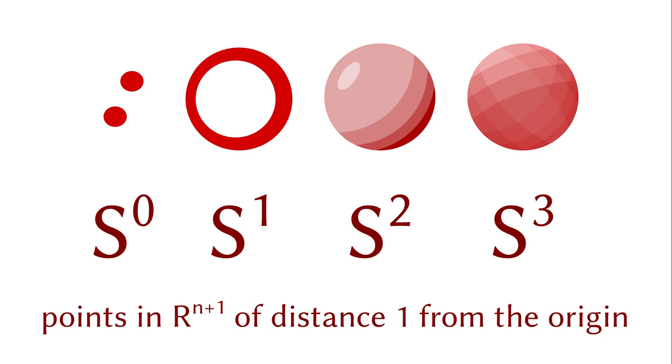So the standard S1 is the circle on the plane, the standard S2 is the surface of the standard ball, and the standard S3 is the surface of the 4-dimensional ball.